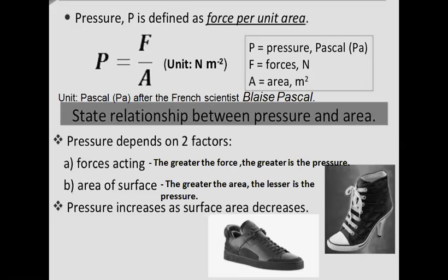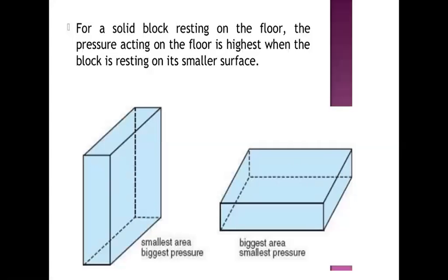To understand this relationship better, let's go through some examples. For a solid block resting on the floor, the pressure acting on the floor is highest when the block is resting on its smaller surface. When the surface area in contact is less, the pressure will be the biggest, but when the solid block rests on a larger surface, the surface area in contact is bigger and therefore the pressure will be smallest.